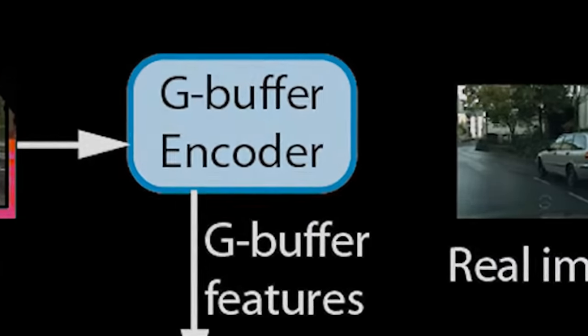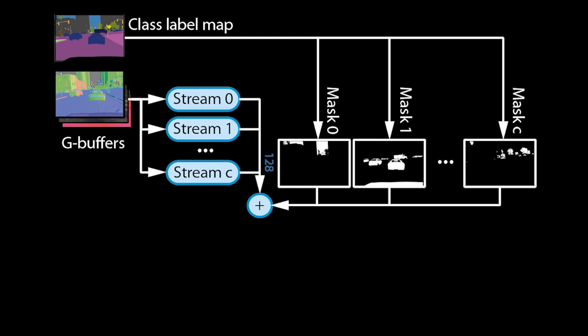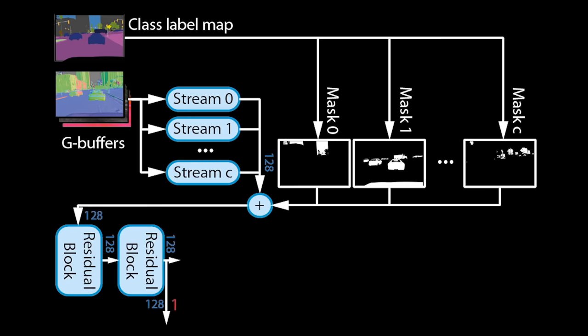Let us now zoom in on the G-buffer encoder. From the G-buffers, we can derive a semantic class label map, which assigns an object ID to every pixel. We pass the G-buffers through multiple convolutional network streams and fuse the streams again based on the object IDs. This allows the encoder to learn different ways of processing for each type of object — for example, trees will be treated differently from cars. The resulting feature tensors are further processed by residual blocks, which output tensors at multiple scales.